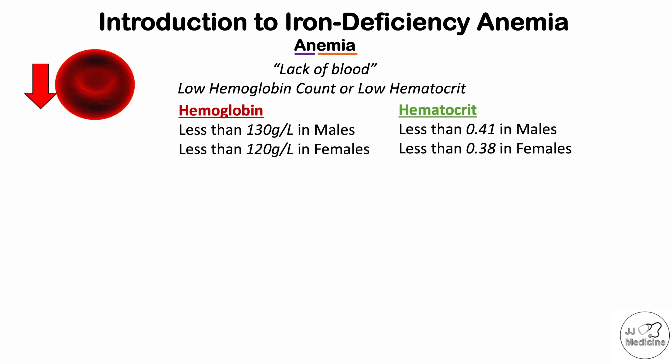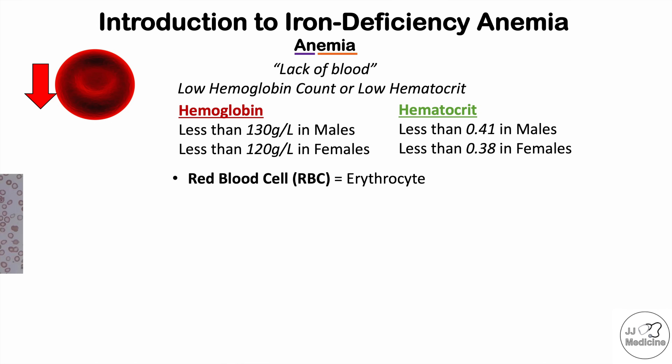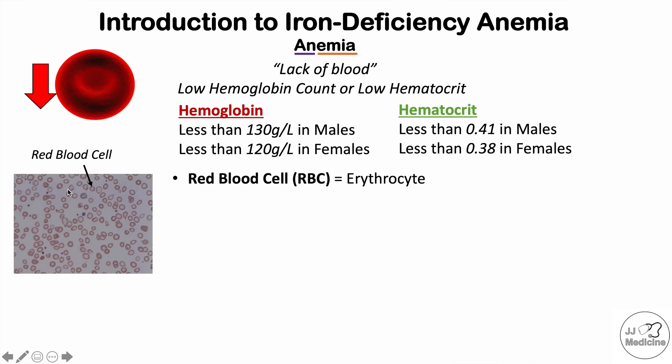These are reference values — you may see slightly different ones in different sources. So why is anemia important? Why do we actually need a proper amount of red blood cells? Red blood cells are also known as erythrocytes. Here is a blood smear showing red blood cells. We're going to talk in more detail about what might be going on with these red blood cells in iron deficiency anemia later in this lesson.